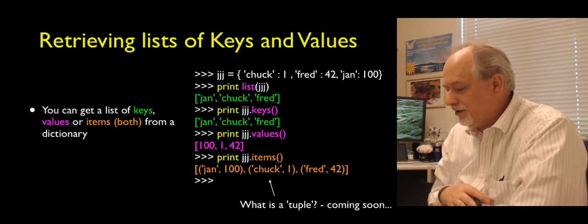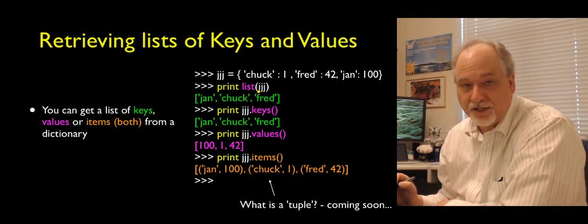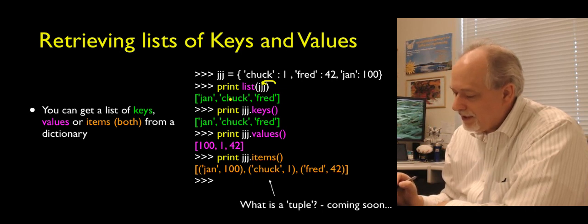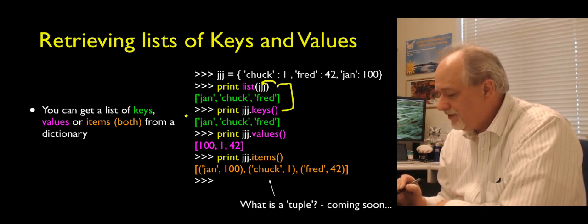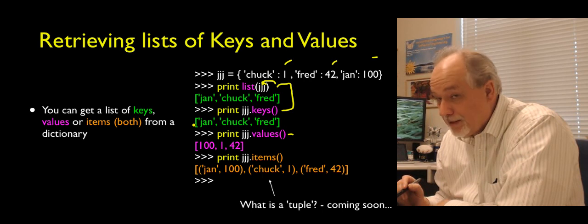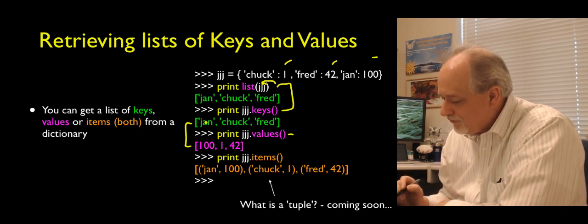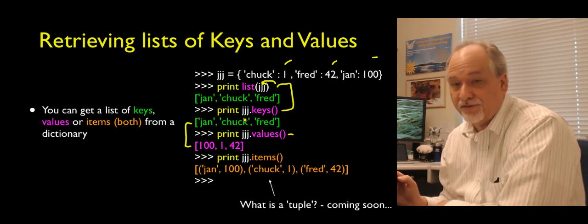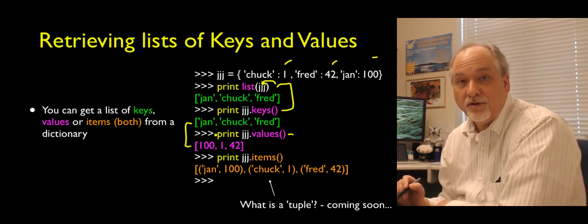There are methods inside dictionaries that convert them into lists. If you say list of a dictionary name, that converts it to a list of the keys. You can also say jjj.keys() to get the same thing. jjj.values() gives you a list of the values — 1, 42, and 100. As long as you don't modify the dictionary in between, the order of keys and values corresponds — so Jan maps to 100, Chuck maps to 1, and Fred maps to 42.